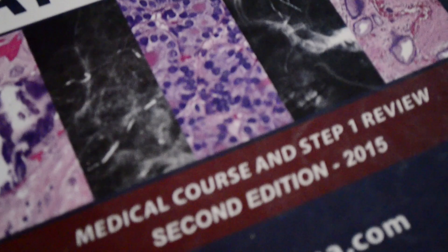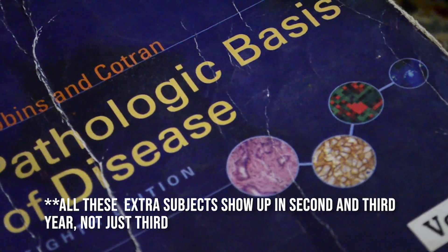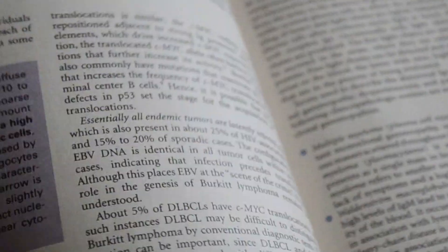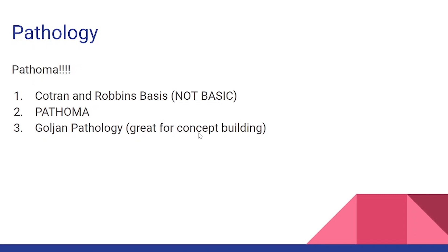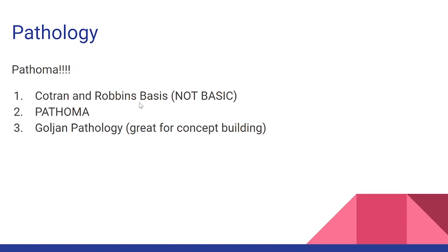For pathology, Pathoma — everyone knows what Pathoma is. In terms of your textbook, Robbins Basis is too big and you won't have the time to read through it. Another option is Goljan Pathology, which is great for concept building and many people say it's much better than Basis. My main reliance is really Pathoma — it will build your understanding. Remember Pathoma is a review book, so you might need to supplement it with YouTube videos to get a better understanding of concepts.